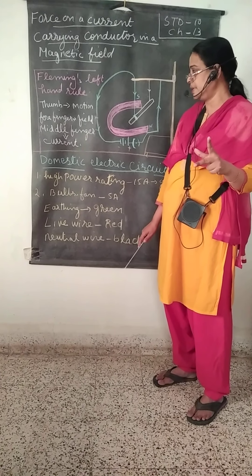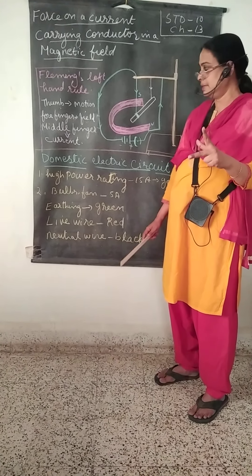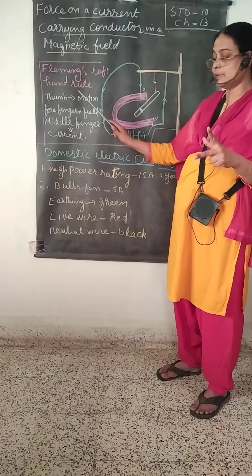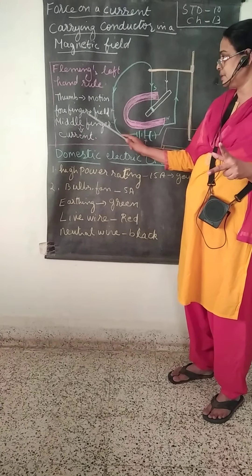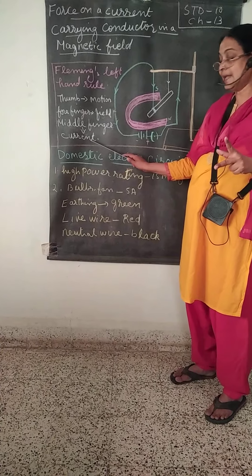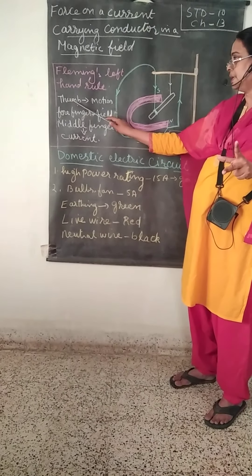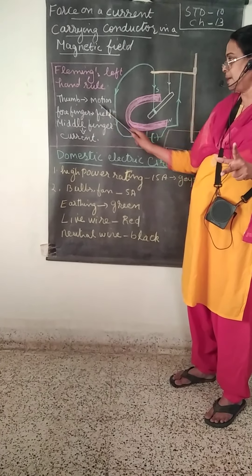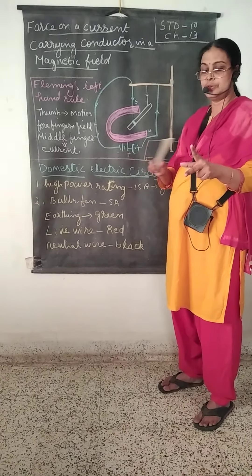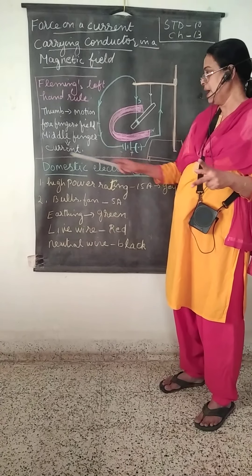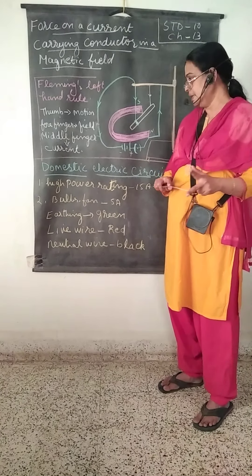Fleming's left-hand rule states that if you keep your left hand in this position, the motion of the conductor is along the direction of the thumb, the forefinger shows the direction of the magnetic field, and the middle finger shows the direction of the current.